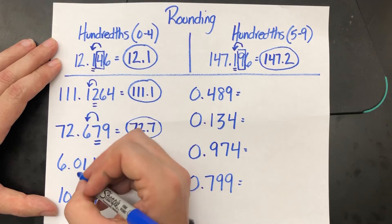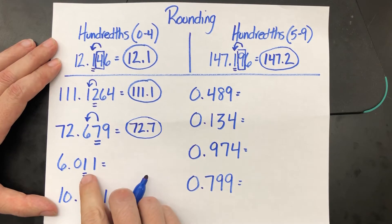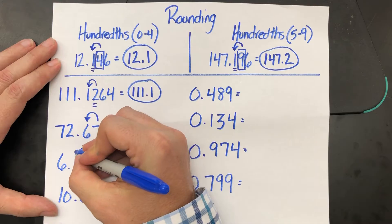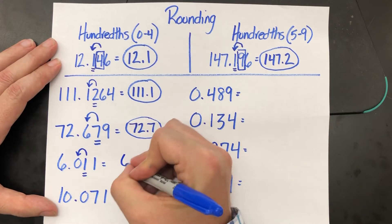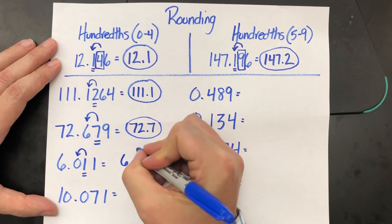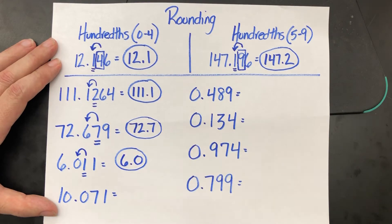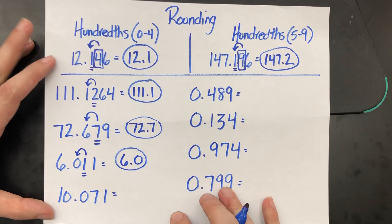Six point zero one one. The one in the hundredths is between zero and four. You leave the zero as is. Six point zero. Don't give me a whole number of just six. Got to make it a scientific number, point zero.